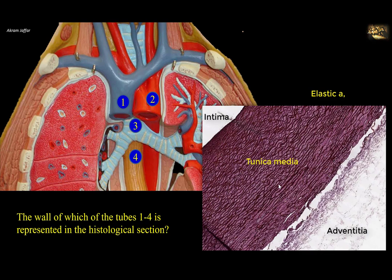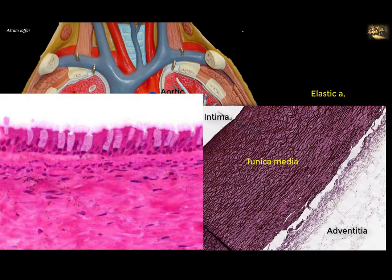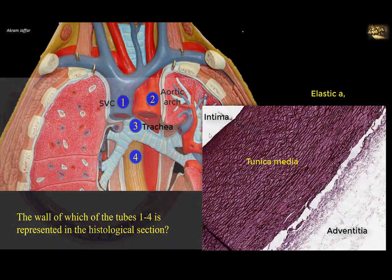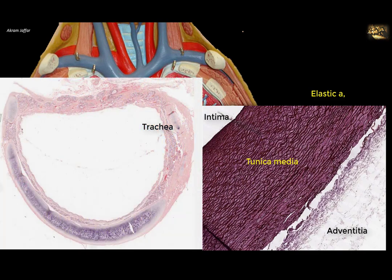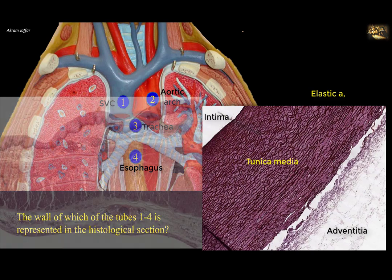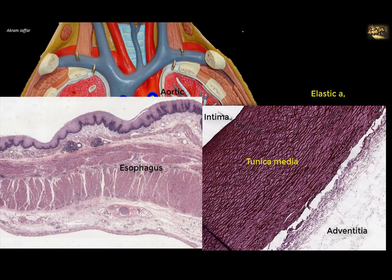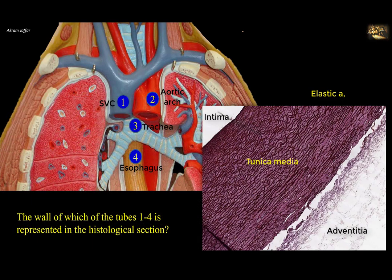On the plastic model, the heart has been removed. One is the superior vena cava — a vein. Two is the aortic arch — an elastic artery from which the histological slide was most likely prepared. Three is the trachea, whose histological structure is totally different: it is lined by pseudostratified columnar ciliated epithelium and contains hyaline cartilages in its wall. Four is the esophagus, lined by stratified squamous non-keratinized epithelium with smooth or skeletal muscle in its wall. So the photomicrograph matches with two.